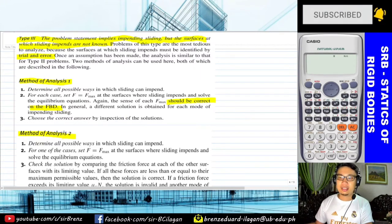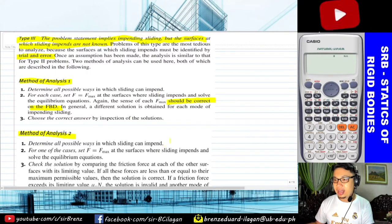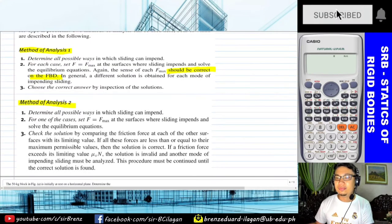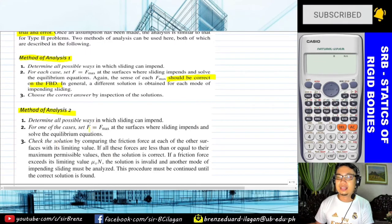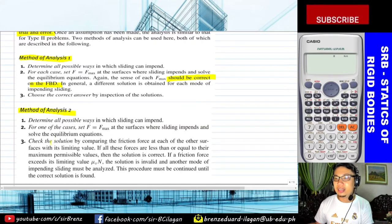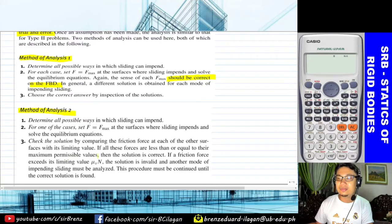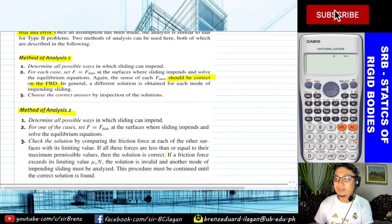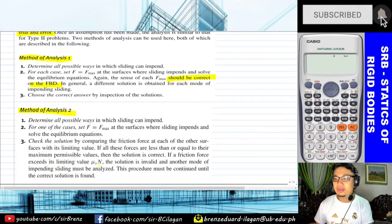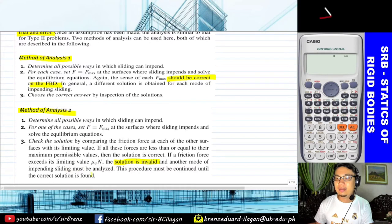For Method of Analysis 2, step one: determine all possible ways in which sliding can impend. Step two: for one of the cases, set F max at the surface where sliding impends and solve the equilibrium equations. Step three: check the solution by comparing the friction force at each of the other surfaces with its limiting value. If all forces are less than or equal to their maximum permissible values the solution is correct. If a friction force exceeds its limiting value mu sub s times N, the solution is invalid and another mode of impending sliding must be analyzed until the correct solution is found.